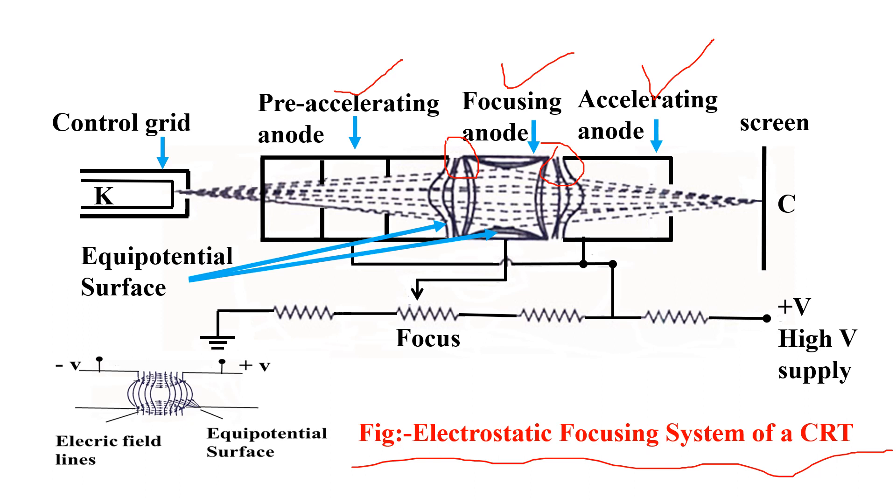In this figure, equipotential surfaces and electric field lines are shown. When two electrodes are maintained at different potentials, such electric field lines and equipotential surfaces are formed.